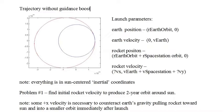Thus, it is necessary to determine both the X and Y components of the rocket launch velocity by trial and error to produce a two-year orbit around the Sun.